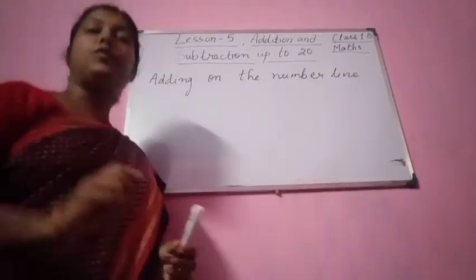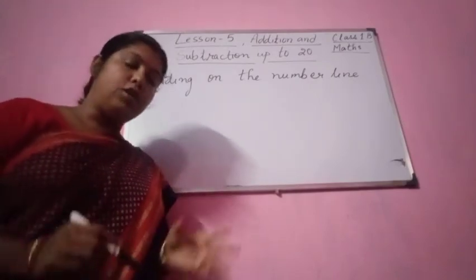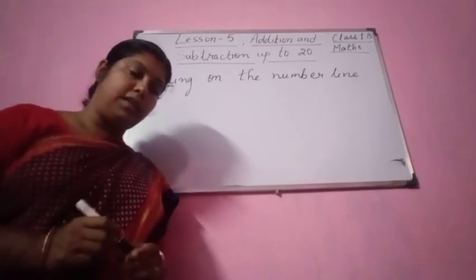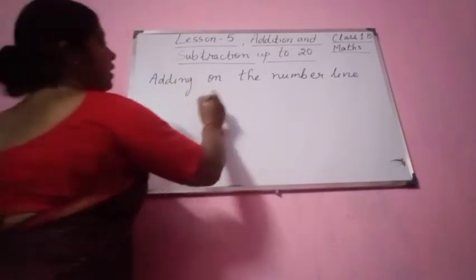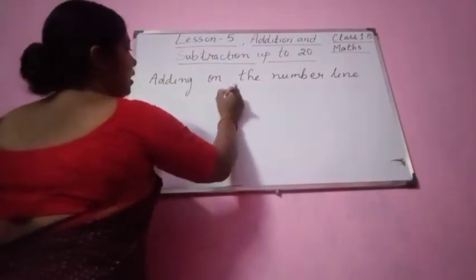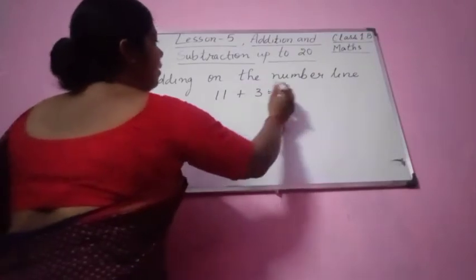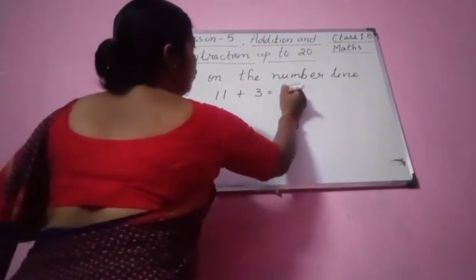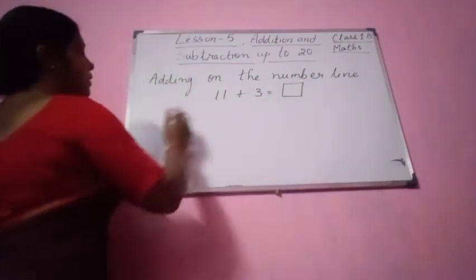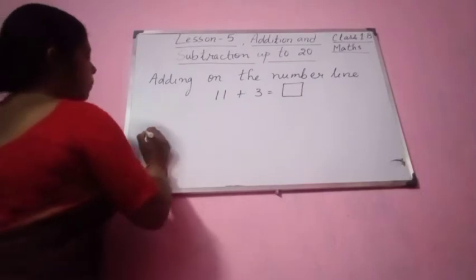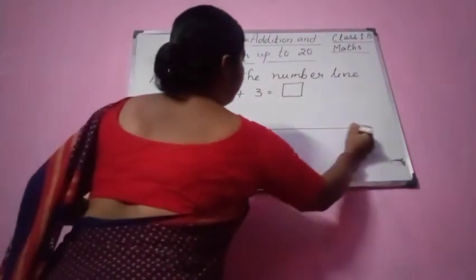Now we will add on the number line. So adding on the number line — let us add 11 plus 3. On the number line we are going to add this number: 11 plus 3.